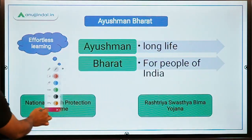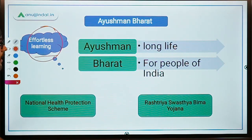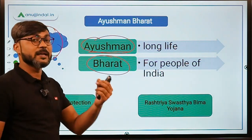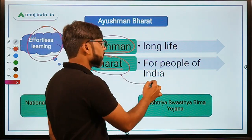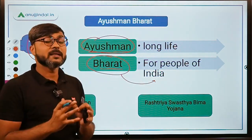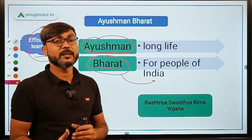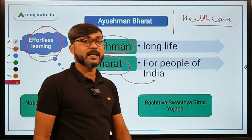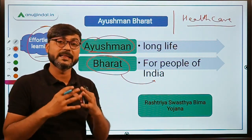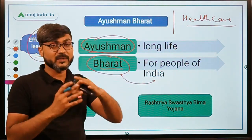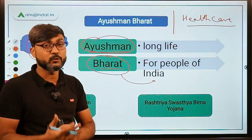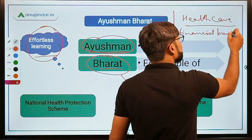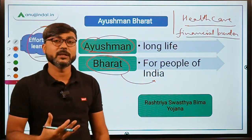Let us first try to simplify the objective of the scheme. The word 'Ayushman' means long life, and 'Bharat' refers to India. So the scheme aims to provide a long life to the people of India by providing good quality healthcare facilities.